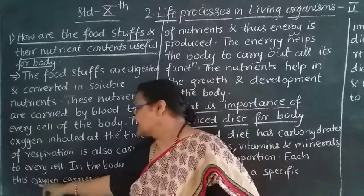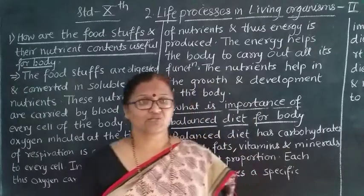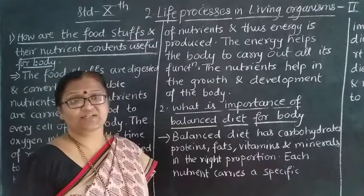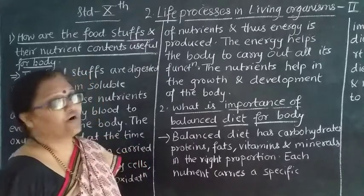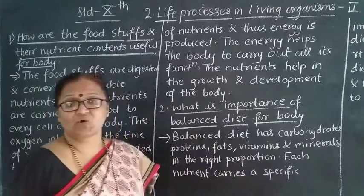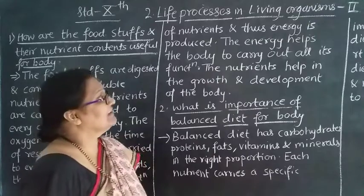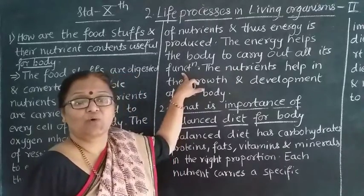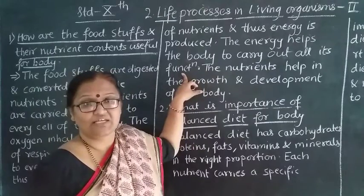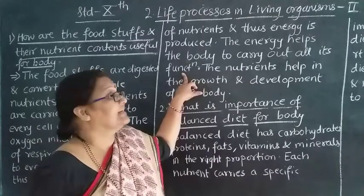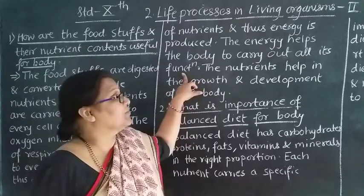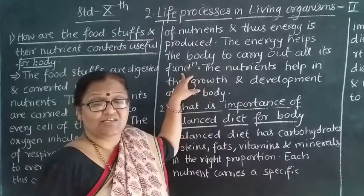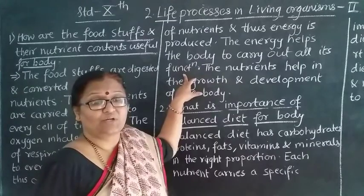In the body, the cells use oxygen to carry out oxidation of nutrients. When there is oxidation of nutrients, there is production of energy. This energy helps the body carry out all its functions — running, walking, talking, writing, and various life processes. Energy is needed for the functioning of each and every part of the body.